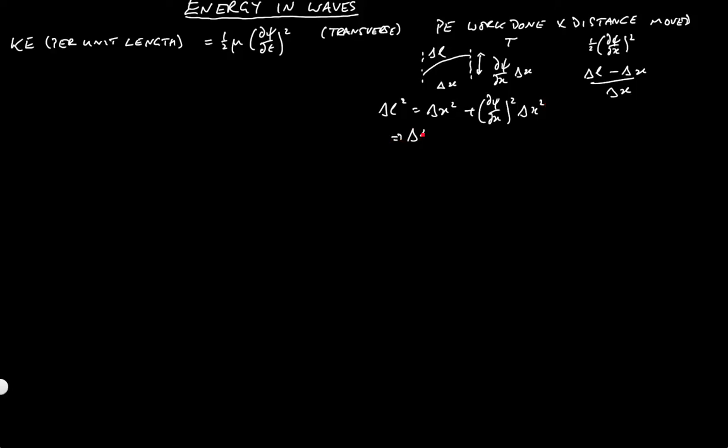Which implies that delta l is equal to delta x multiplying the square root of 1 plus dpsi by dx squared to the half. And using the binomial theorem, that's approximately equal to delta x into 1 plus a half dpsi by dx squared.